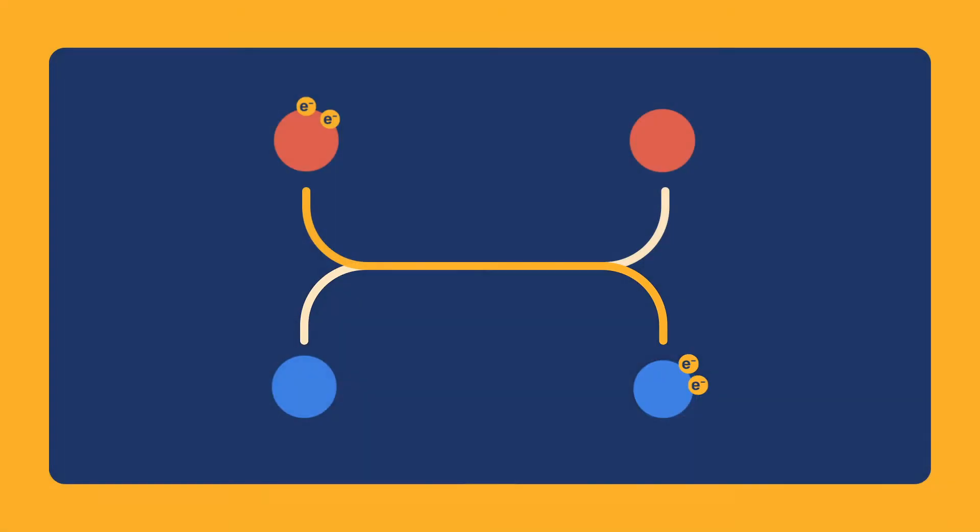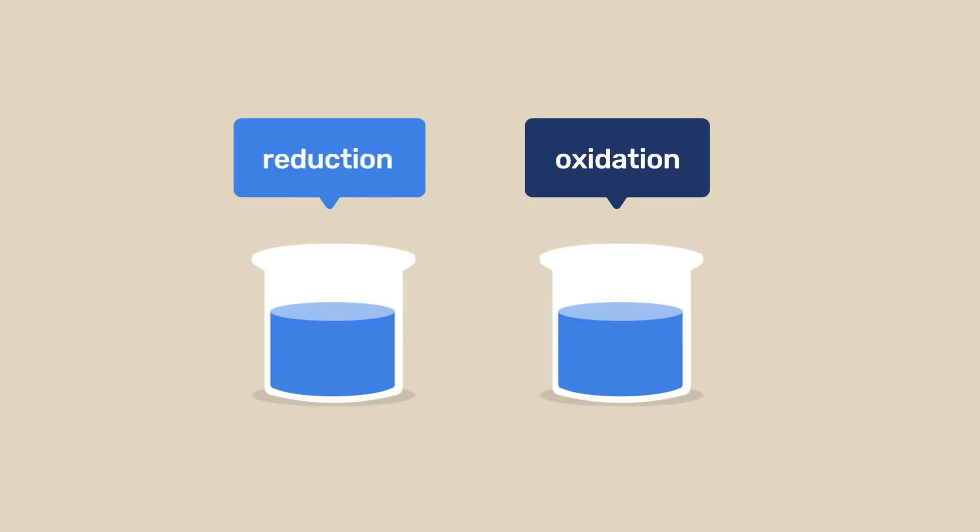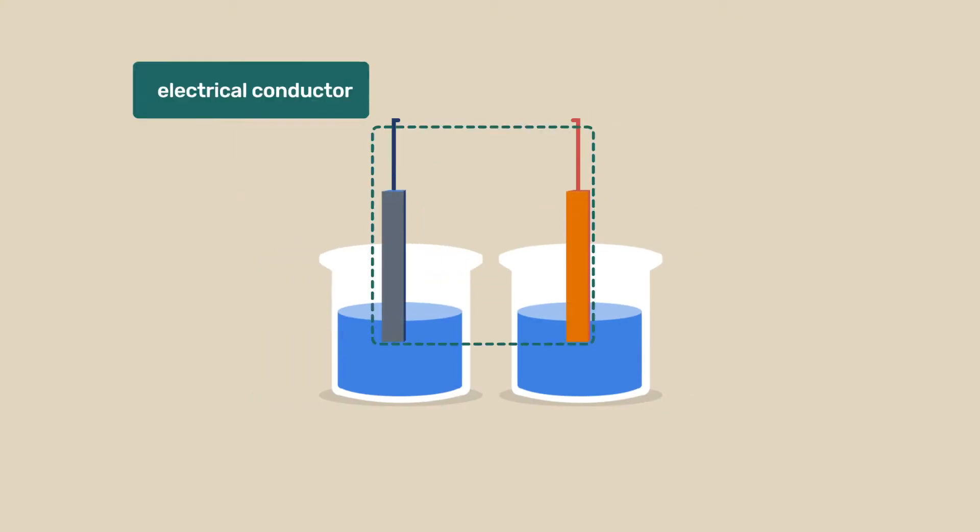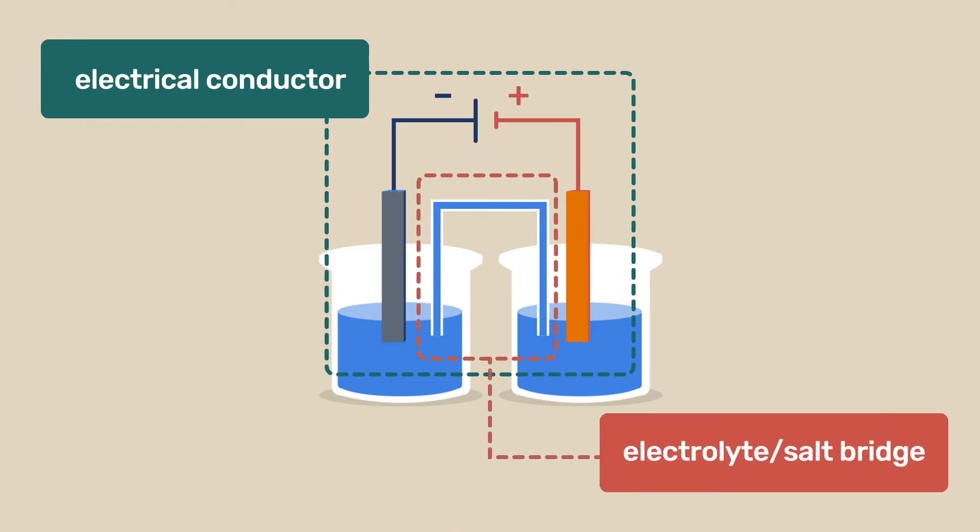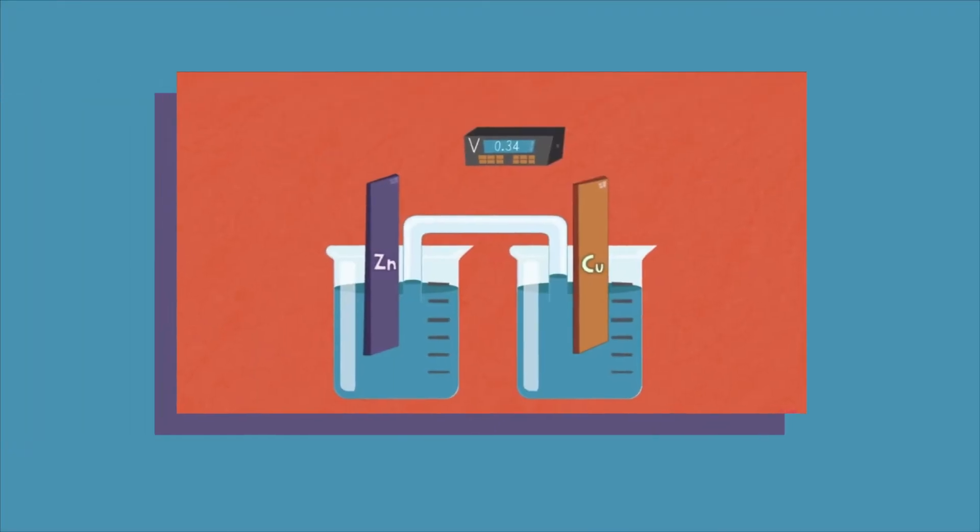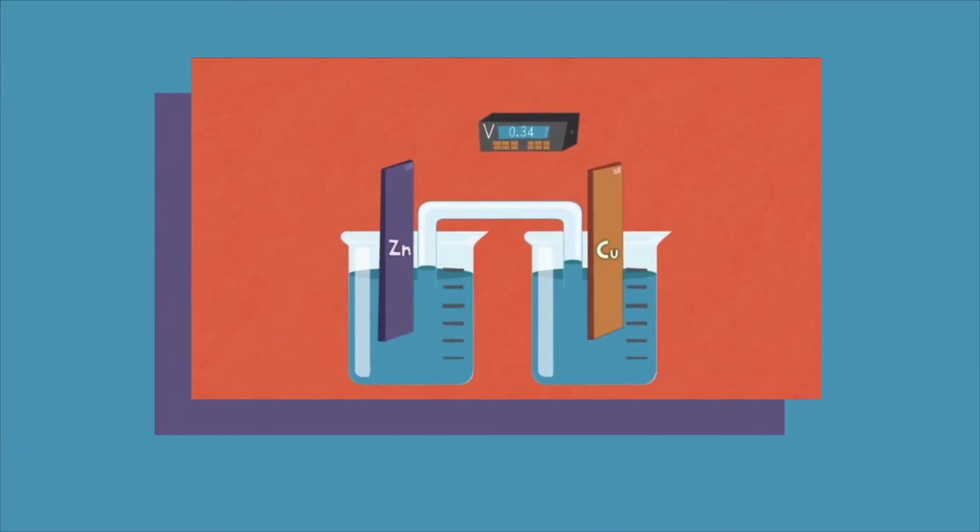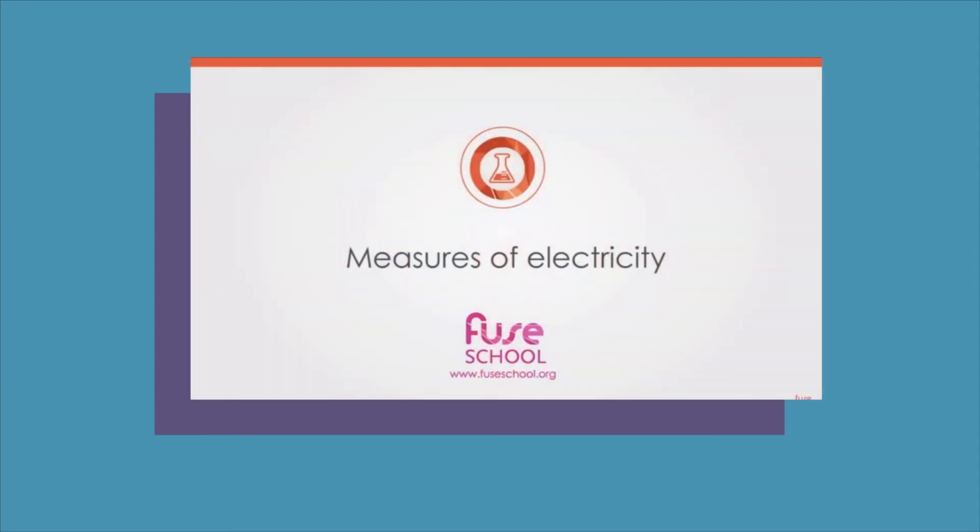A redox reaction can take place even when both half-reactions are separated in space, provided they are linked first by an electrical conductor and second by an electrolyte, generally referred to as a salt bridge. For more on the combination of half-cell reactions, please check the video Measures of Electricity.